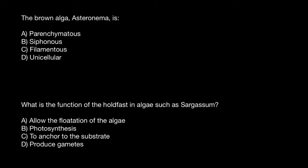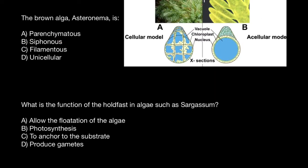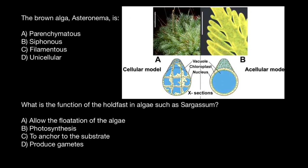Next: siphonus. Take a look at this picture. Here on the left we see a plant that consists of multiple cells. But here on the right, we see a plant that consists of only a single cell. Instead of calling it unicellular, we call it acellular.